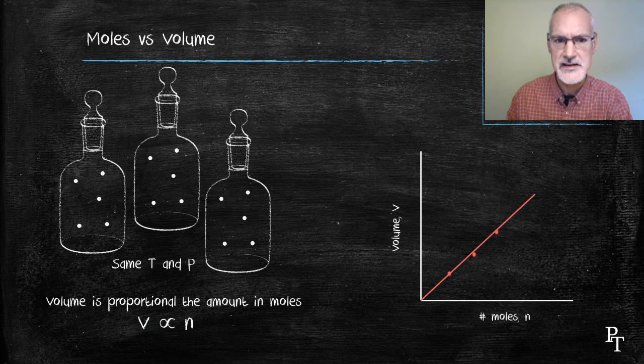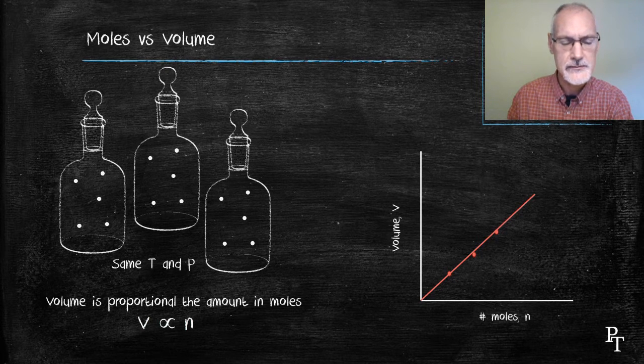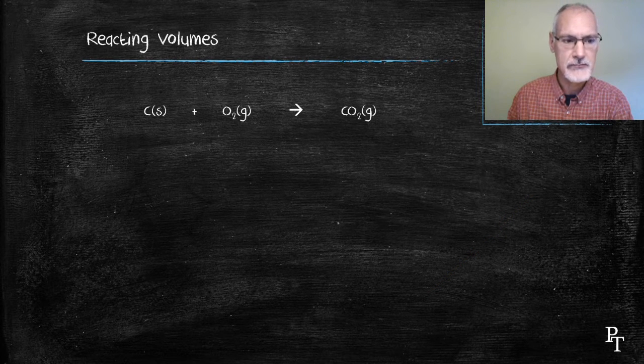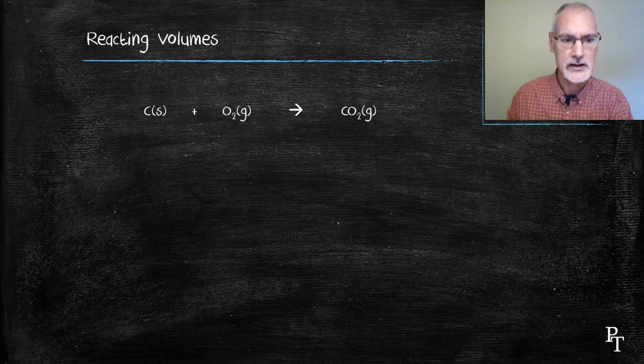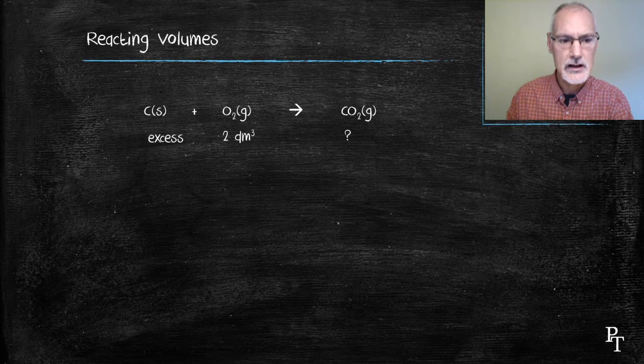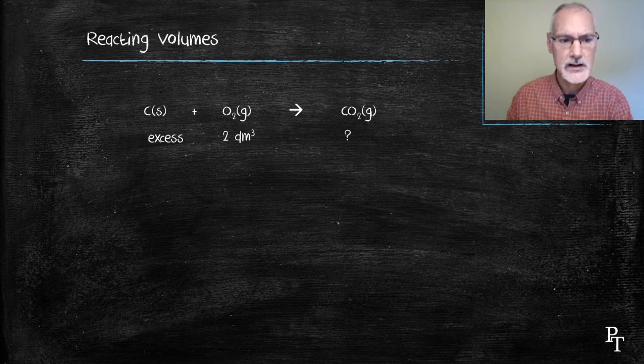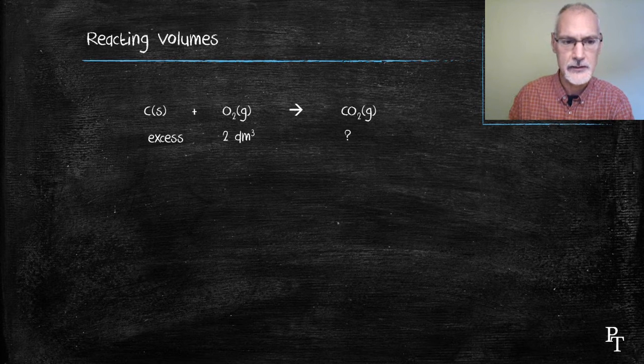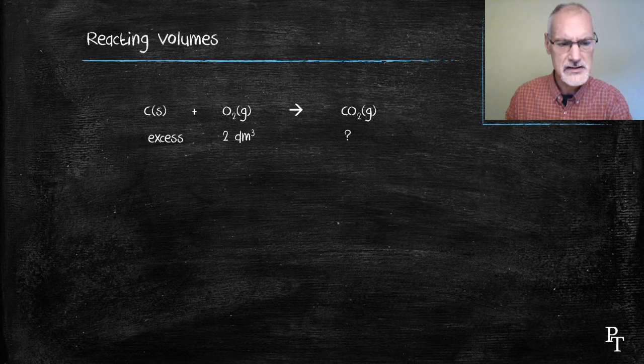Now let's put these ideas together now with some reactions. Let's consider if you would carbon solid reacting with oxygen gas. I've got extra carbon solid and I have two liters or two decimeters cubed of oxygen gas. I'd like to predict how much carbon dioxide gas I'm going to get.